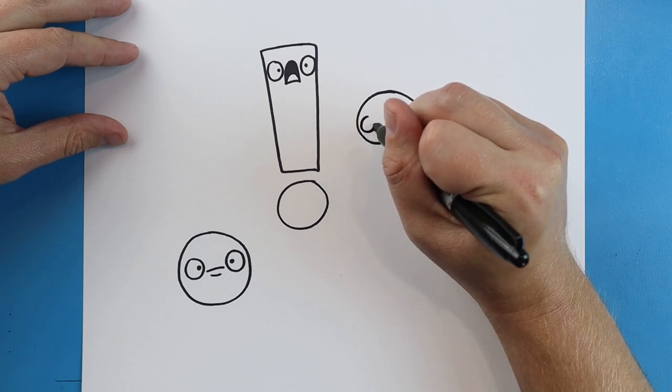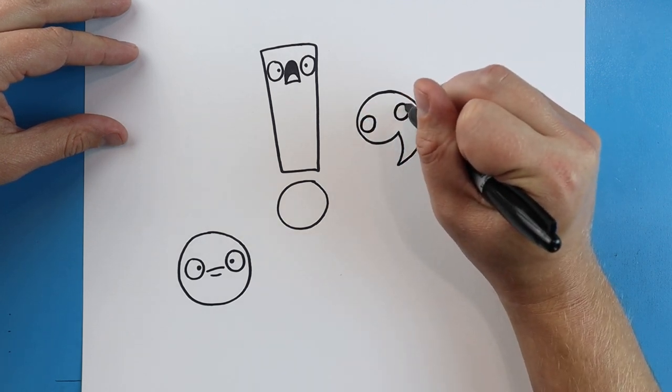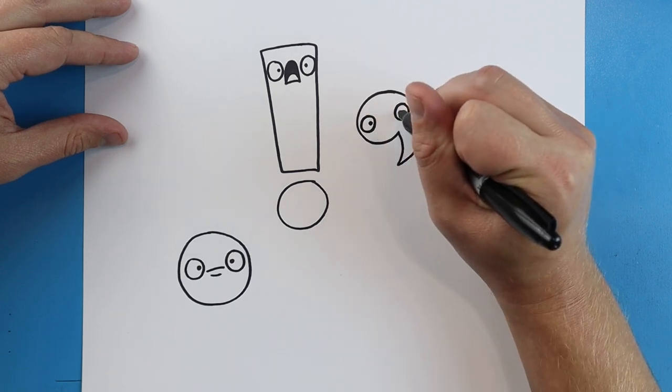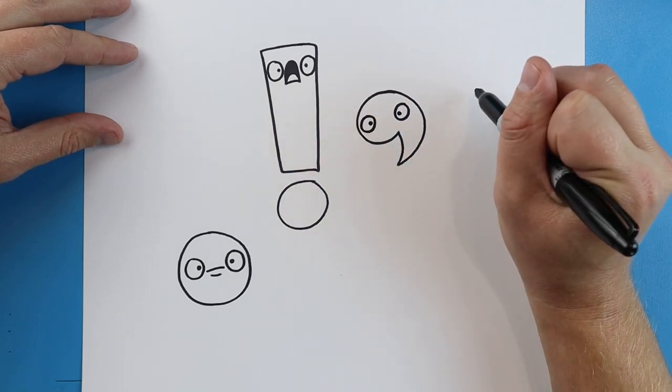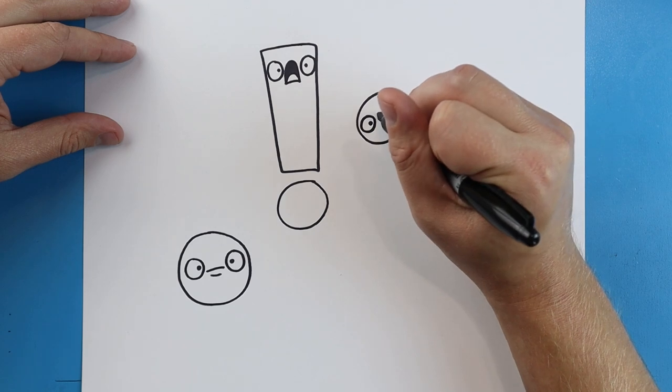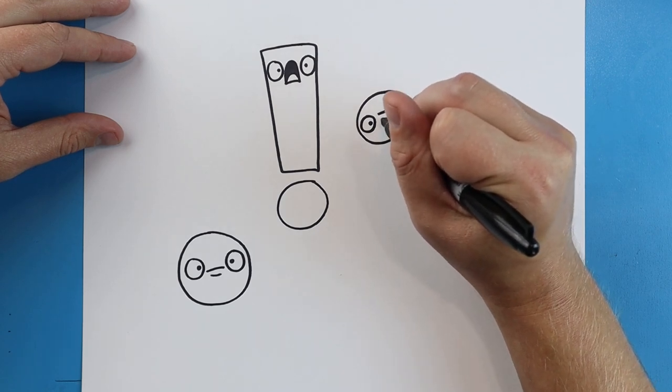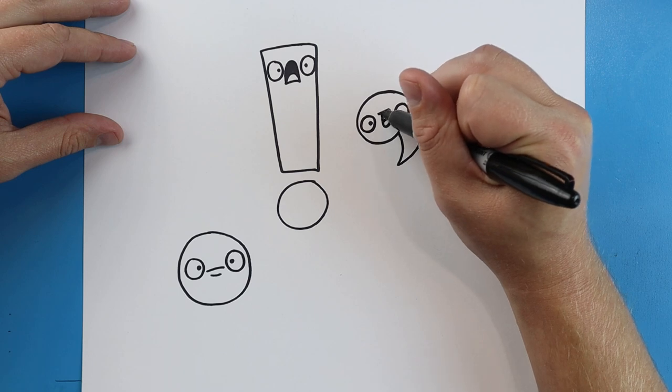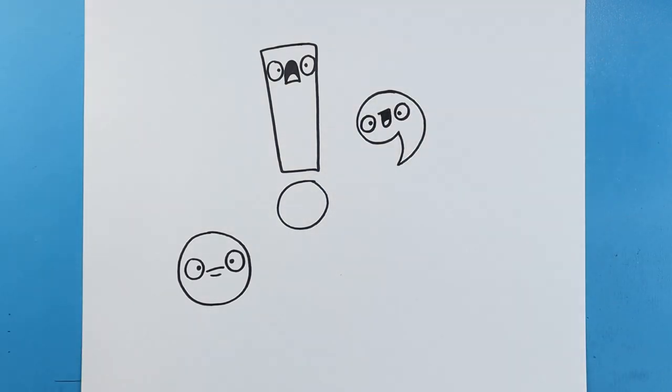I'll add a circle here, and a circle over here, with a little black dot inside each one. Then we'll make a little line across with a big happy face. A little curved line for the tongue, and then color it in.